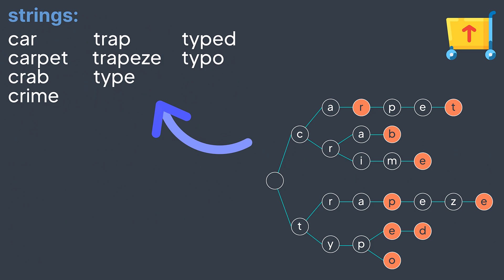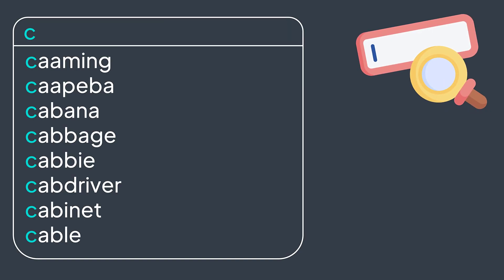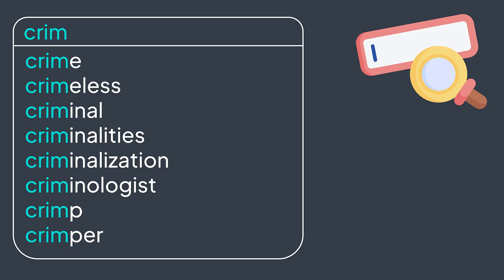We've reached the end of this video. We talked about the trie data structure — an interesting data structure to know. We covered its advantages, some different implementations, and implemented its main operations: insertion, search, deletion, and retrieval. In the next video, we will use it to implement the autocomplete feature, so make sure to subscribe to the channel.